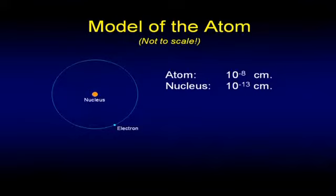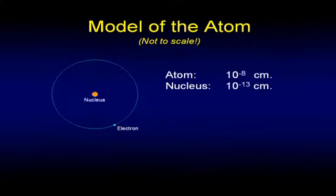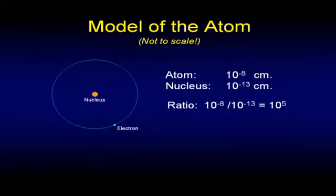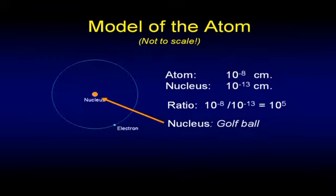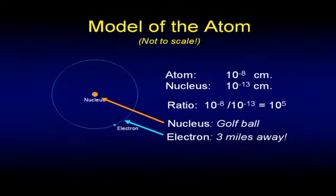The important thing isn't the absolute numbers — they're obviously very small. The important thing is the ratio between them. Whatever the nucleus is, the electron is 100,000 times that size in radius — that's linear, 10 to the fifth. If I make the nucleus the size of a golf ball, the electron is actually three miles away. So if we were going to build a model, it's quite an ambitious project: nucleus the size of a golf ball, electron three miles away. That's just the linear distance.